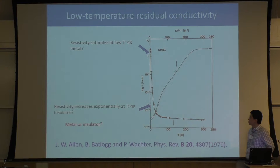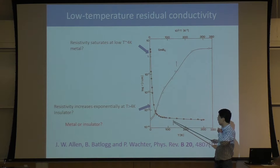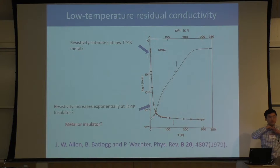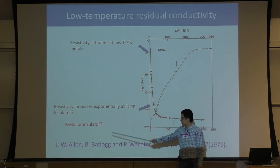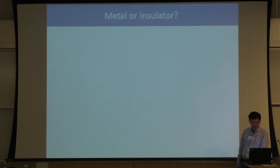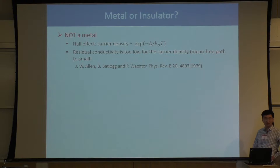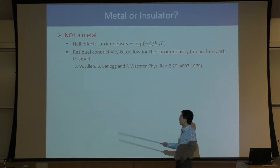This transport behavior is very interesting. If you look at the high temperature part of the curve, this is standard insulating behavior. But if you look at the low temperature part, the conductivity is not infinite — it's finite, it looks like a metal. So whether the material is a metal or insulator was a central focus of lots of debates in the 70s. Towards the end of the 70s, people eventually converged: this is not a metal, it's an insulator.